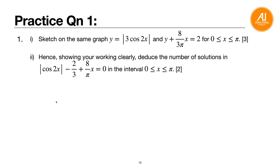Let's try one practice exam question. Sketch on the same graph y equals modulus of 3 cosine 2x, plus another line y plus 8 over 3π times x equals 2. Draw from 0 to π in radians — no degrees allowed. The second part: show your working clearly to deduce the number of solutions. We'll do part 1 first.